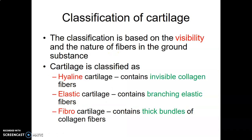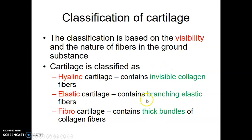How do you classify cartilage? You classify based on how visible the fibers are within the ground substance. Hyaline and fibrocartilage contain abundant collagen fibers, while elastic cartilage mainly contains elastic fibers. The collagen fibers in hyaline are invisible, while in fibrocartilage the collagen forms thick bundles. The elastic fibers in elastic cartilage exist as branching and anastomosing fibers — they branch and connect.